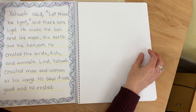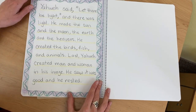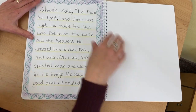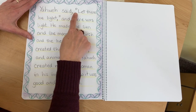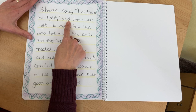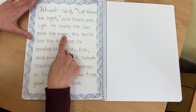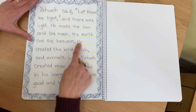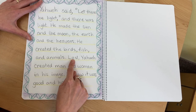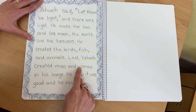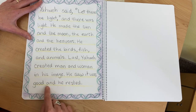Now we are going to do our drawing for this first little bit of story that we heard. So let's read what we've written here. Yahweh said, let there be light, and there was light. He made the sun and the moon, the earth and the heavens. He created the birds, fish, and animals. Last, Yahweh created man and woman in his image. He saw it was good, and he rested.